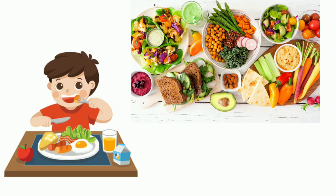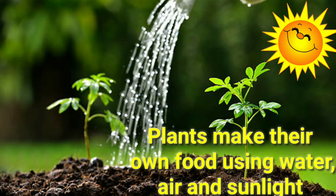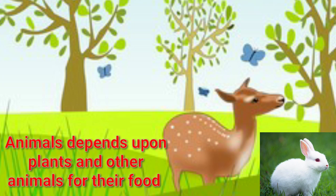Living things need food and water. Human beings depend upon plants and animals for their food. Plants make their own food using water, air and sunlight. Animals depend upon plants or other animals for their food.